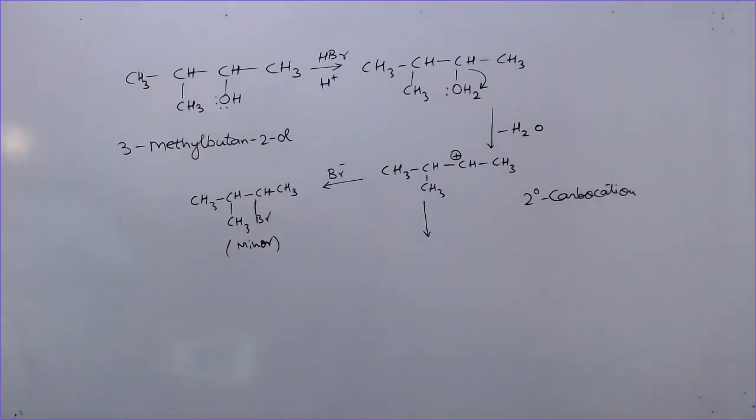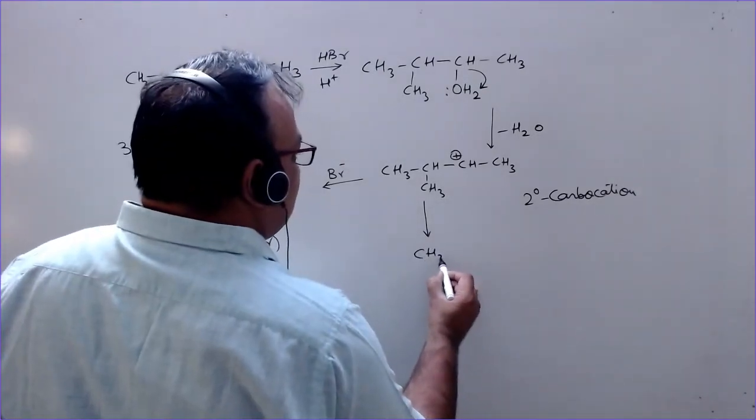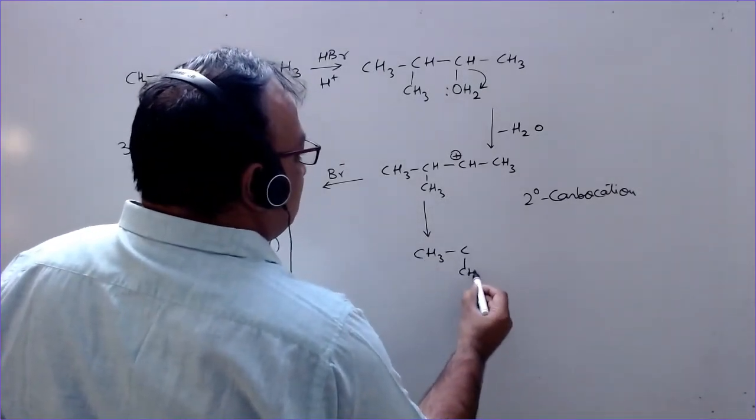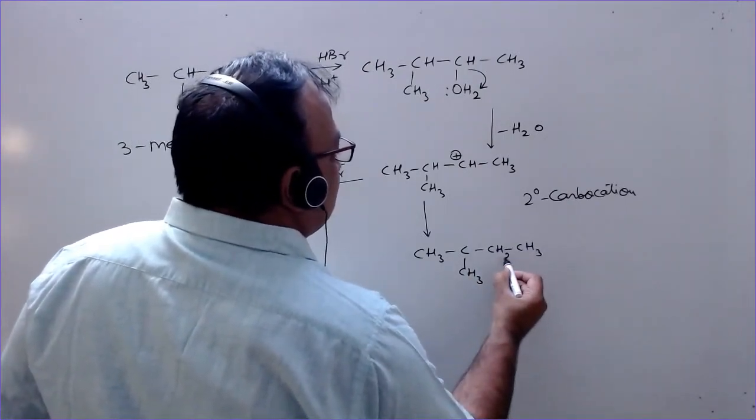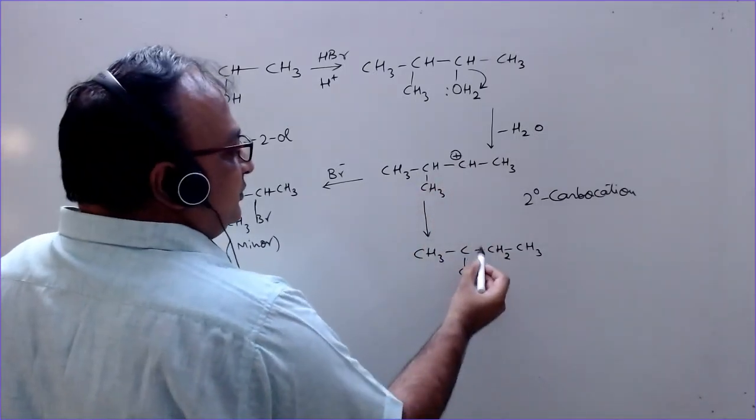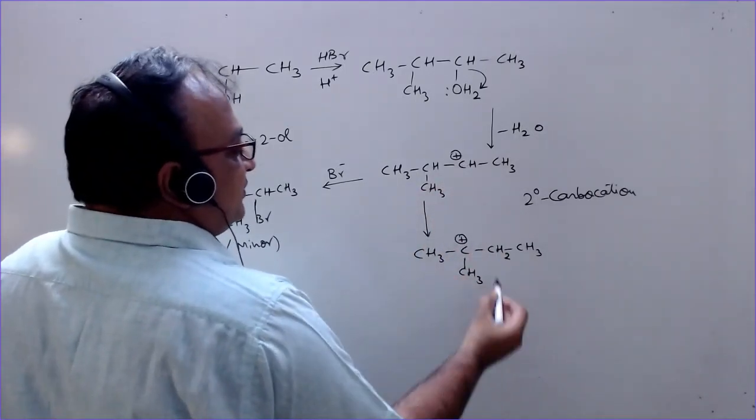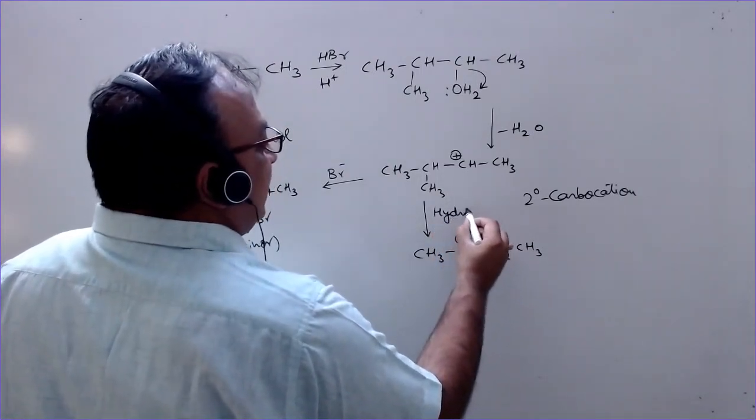So by 1,2 hydride shift or simply the shift of hydrogen, this is converted into the tertiary carbocation. So how this happens? Because this hydrogen shifts to this carbon and the positive charge shifts here. This is called hydride shift.